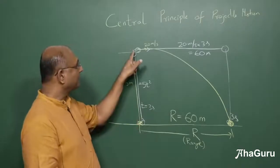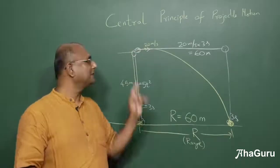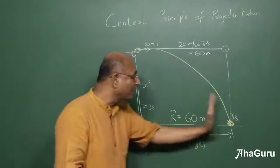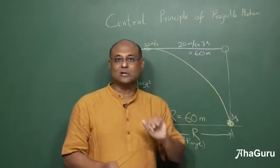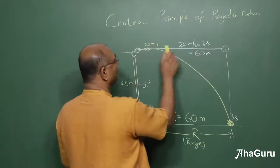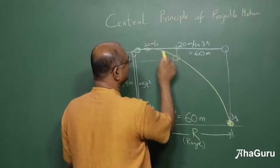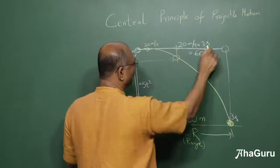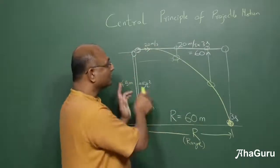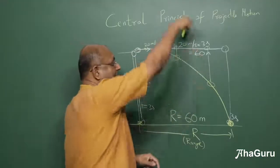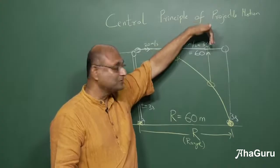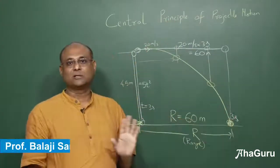Let us quickly recap what we did. We solved one question by breaking it into two parts. First, the dropped ball's time equals the thrown ball's time. Second, the thrown ball's horizontal movement equals that of a ball moving at constant horizontal velocity with no gravity. The gravitational force adds vertical displacement but leaves horizontal displacement unchanged. So the range is 60 metres.